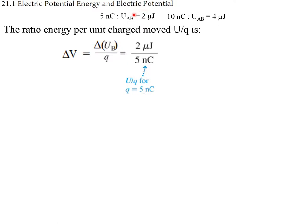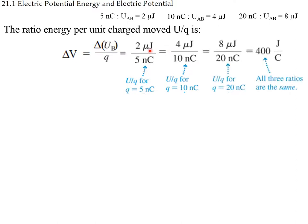For 5 nanocoulombs with energy 2 microjoules: V = 2/5. For 10 nanocoulombs: V = 4/10, which is the same as 2/5. For 20 nanocoulombs: V = 8/20, also the same. In all three cases we end up with the same number — the difference in electric potential between points A and B is independent of the charge being moved.